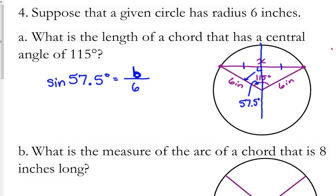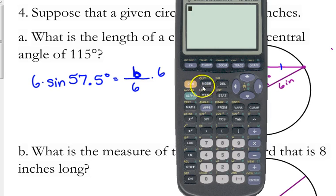How do we solve this? Multiply by 6. Make sure our calculator is in degree mode. In case somebody reset it somewhere along the line. So, 6 sine of 57.5 gives us 5.06.